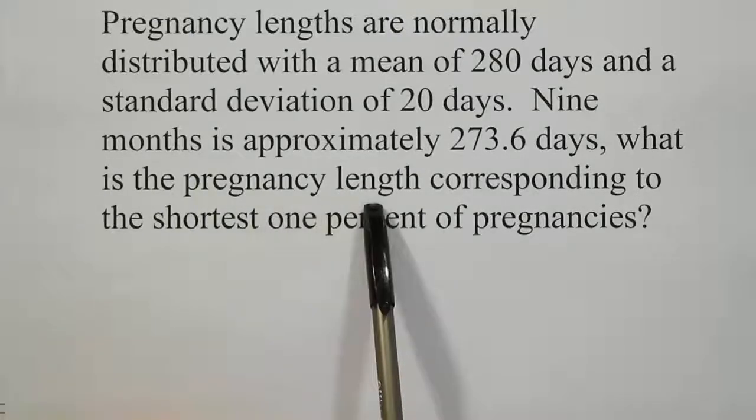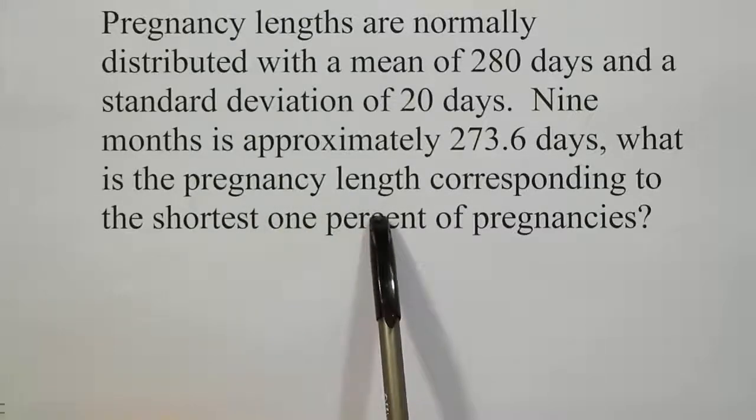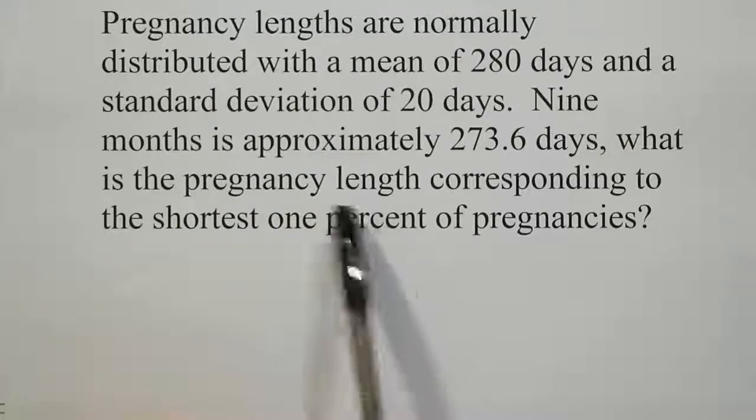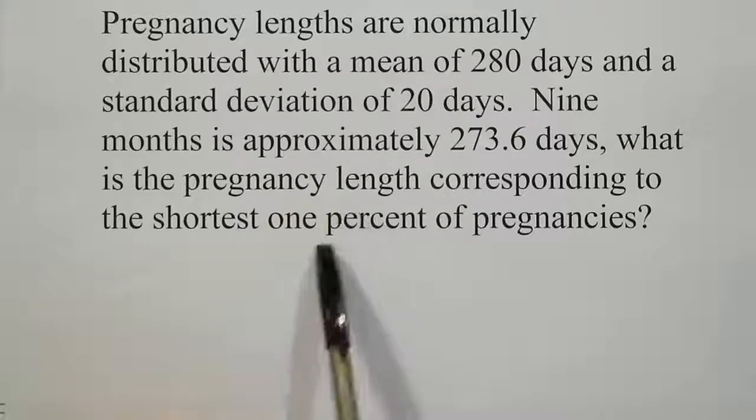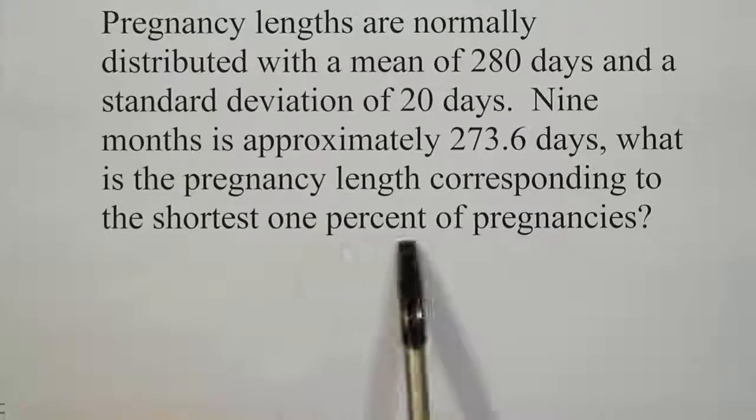This indicates to us that it's not the probability question that we have to work out, but rather a scenario where we're trying to find a value from the bell curve that corresponds to a certain percentage, in this case the shortest 1%.